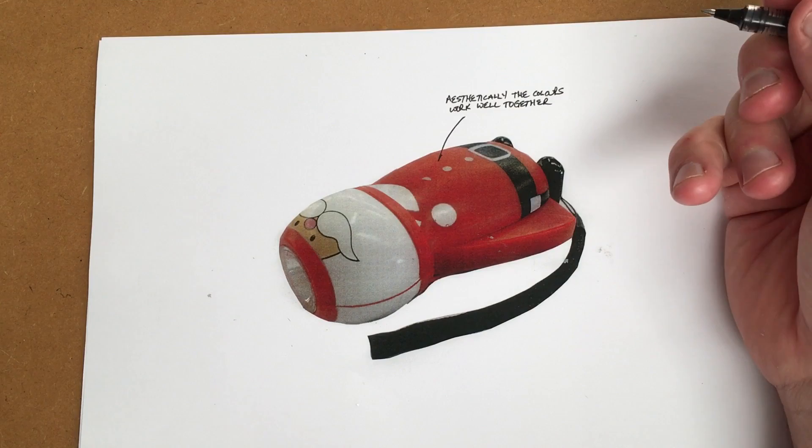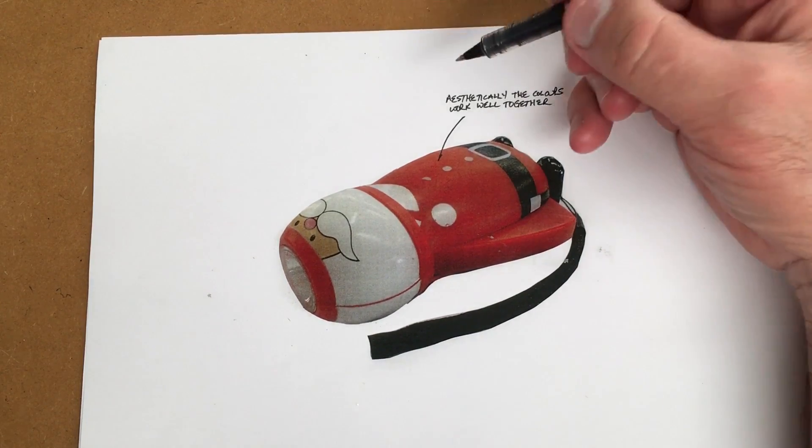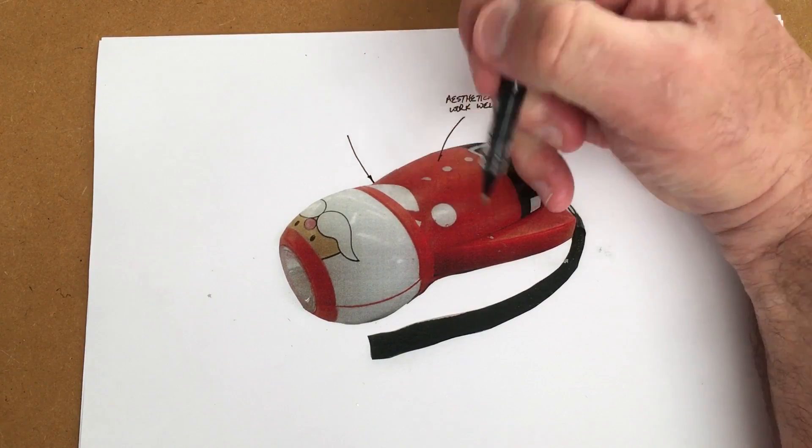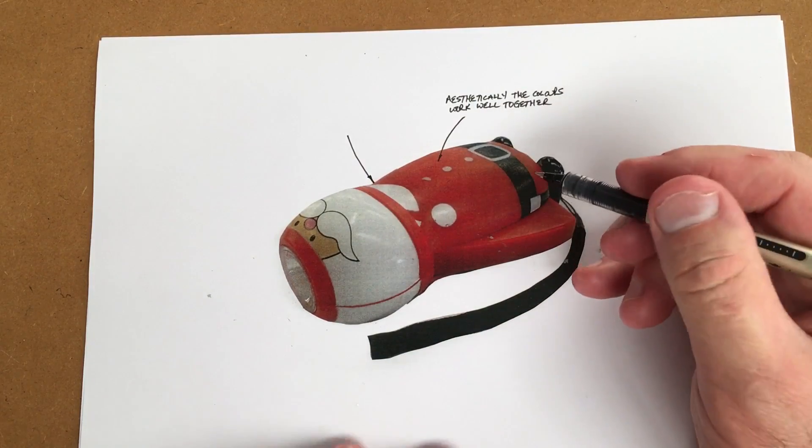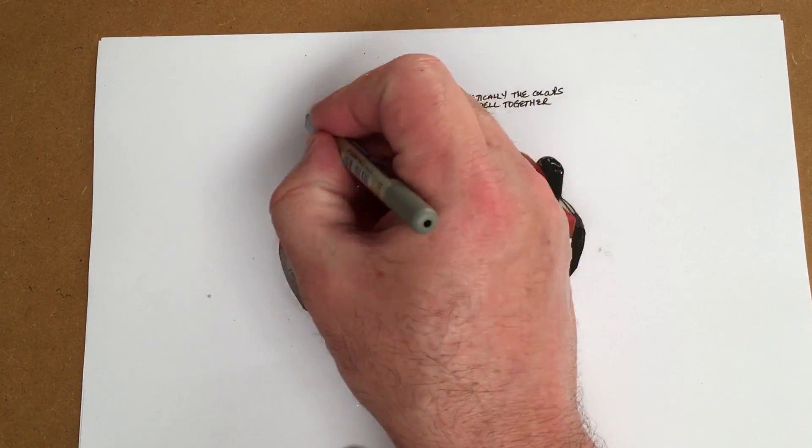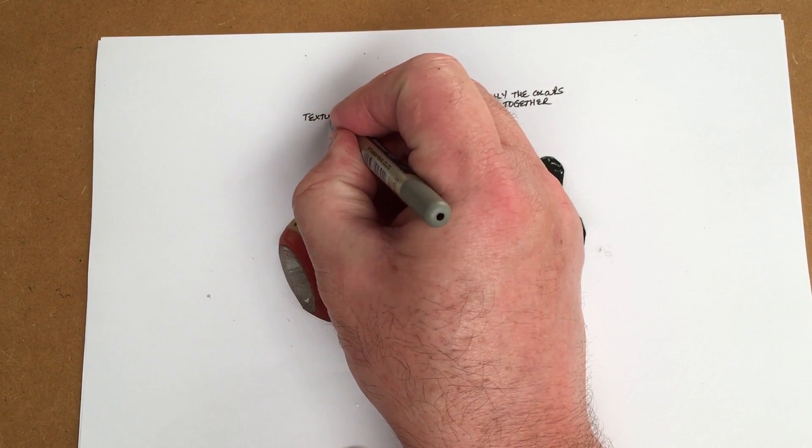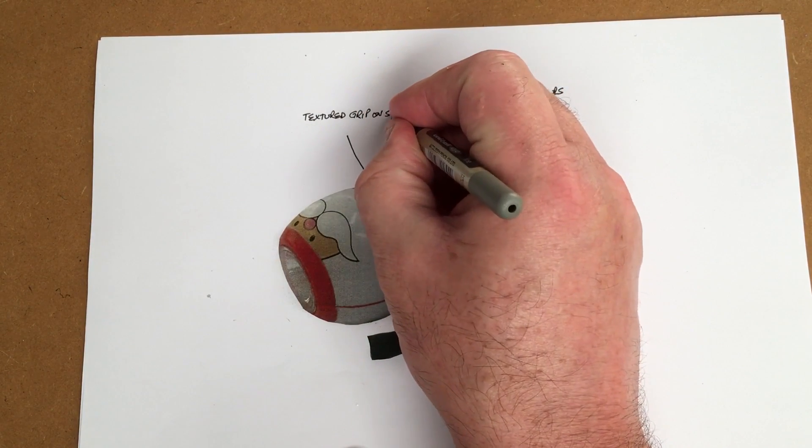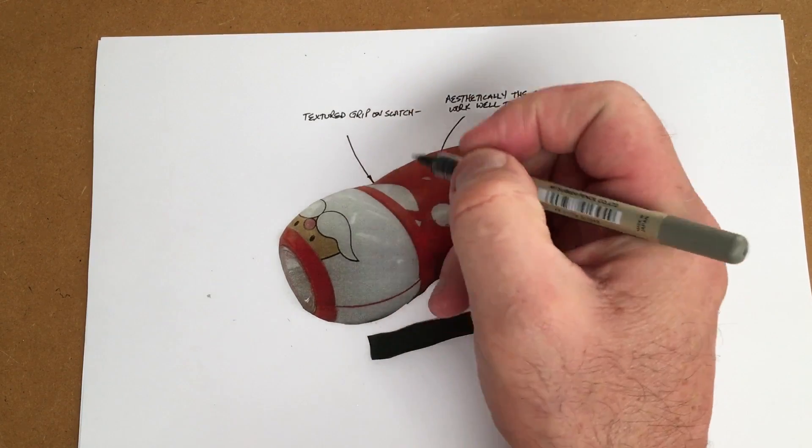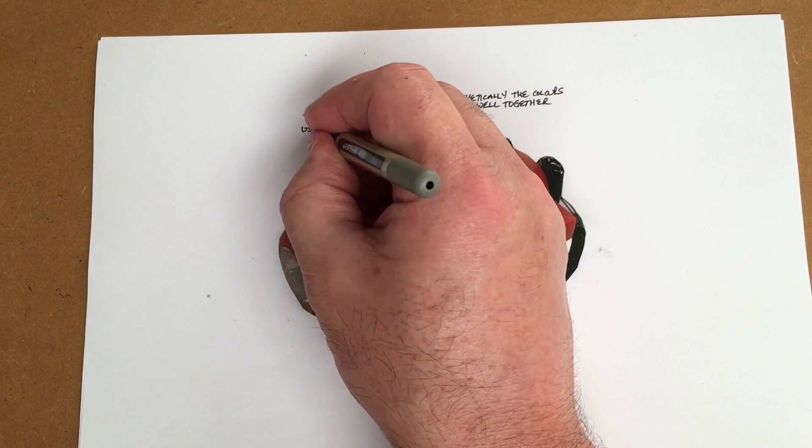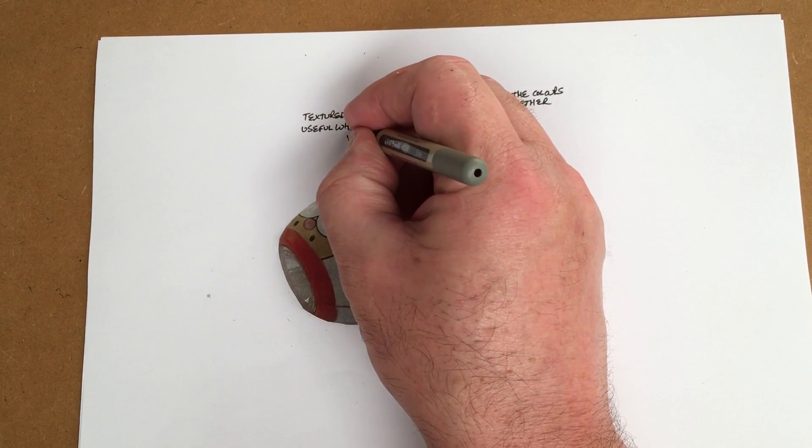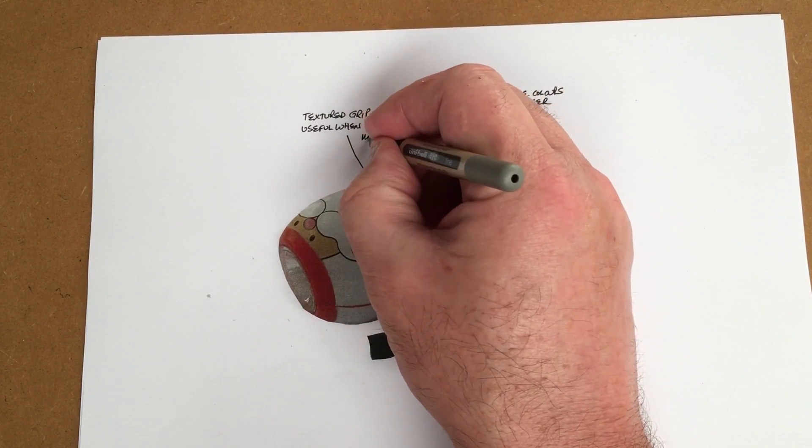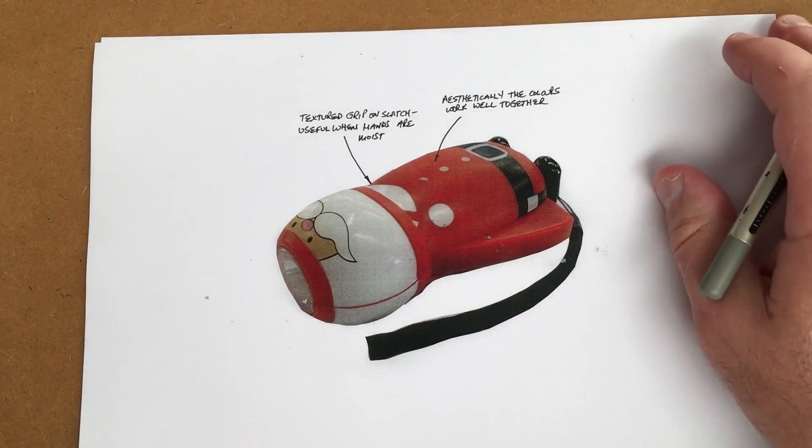I know we've got a novelty item here. I can't see around the back there, but I know there's a switch there, so I'll just put my arrow there. I'm going to actually say that there is a textured grip on switch, and then I'm going to put a dash, useful when hands are moist.